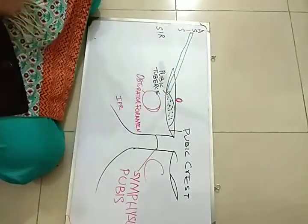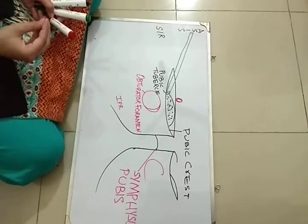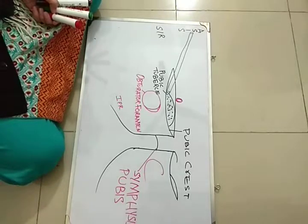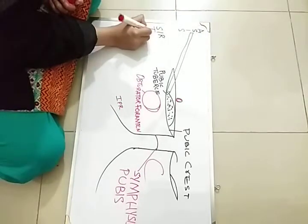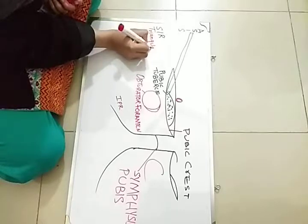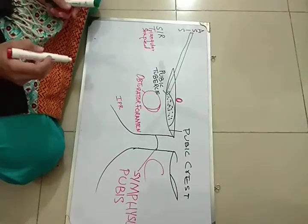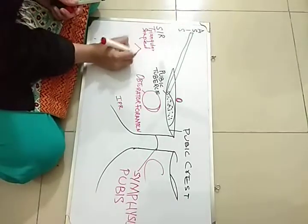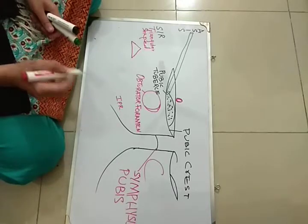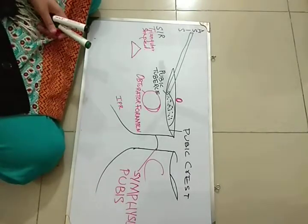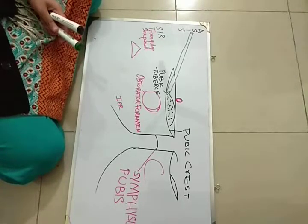This is the superficial inguinal ring. The superficial inguinal ring is actually a triangular-shaped defect in the external oblique aponeurosis. As it is triangular-shaped, it must have an apex and a base. Its apex is directed superiorly and laterally, and its base is formed by the medial and the lateral crura.